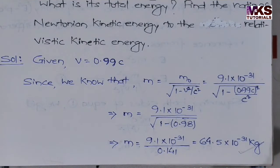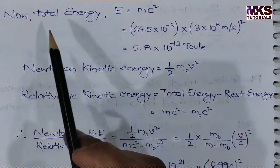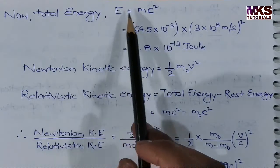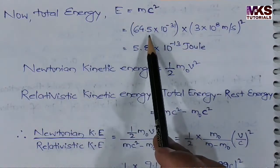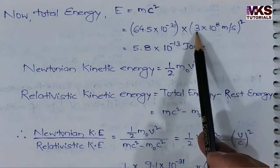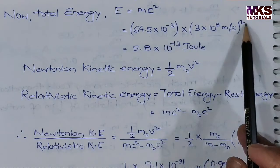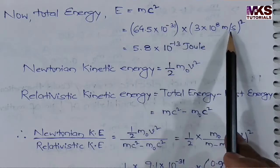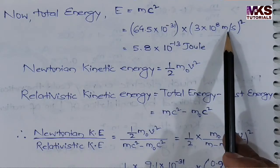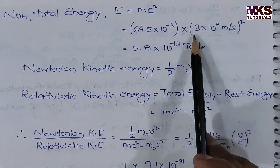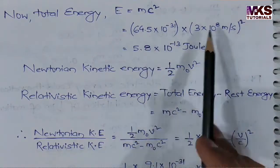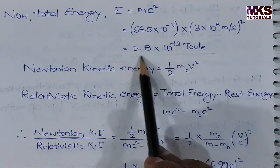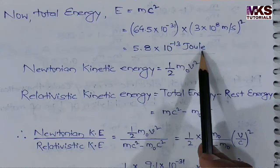For the first part, total energy E is equal to mc². So m is the relativistic mass we found, and c is 3 × 10⁸ meters per second. We use SI units, so we substitute the values and multiply to get the result in joules, which is the SI unit of energy.